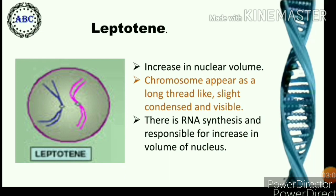In leptotene, there is an increase in nuclear volume and chromosomes appear as long thread-like structures, unassociated with one another. There is very slight condensation of chromosomes, so they become visible as fine threads. All of them remain together in the nucleus and appear like a ball of knitting wool. There is RNA synthesis, which is responsible for the increase in volume of the nucleus.